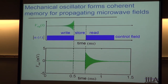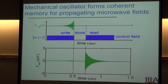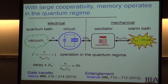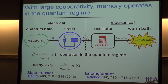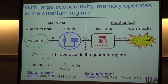When we turn the control field back on, out comes our microwave pulse again. We've changed the temporal envelope from a rising exponential to a decaying exponential. This is what I mean by a memory element — we can write a propagating field into mechanical motion, store it there for a long period of time, and then get it back, turning it back into a microwave field whenever we desire.